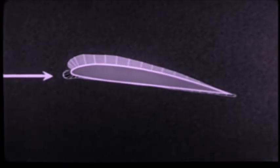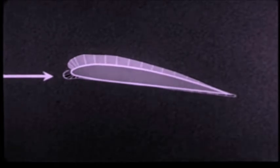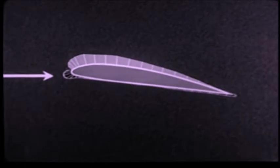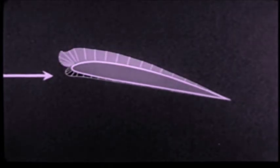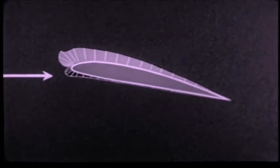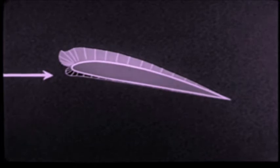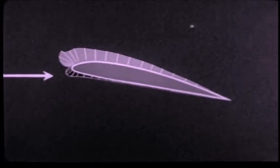Increasing the angle of attack still further alters pressure distribution very little, although there is a marked change in values, particularly along the upper surface, where negative pressures are now exerting a powerful lift force. The wing is now approaching its stalling angle. Positive pressures have changed very little in either distribution or value. The negative values, however, have increased somewhat, especially at the leading edge.